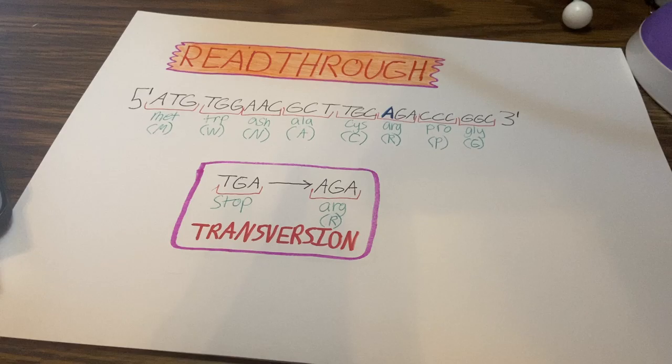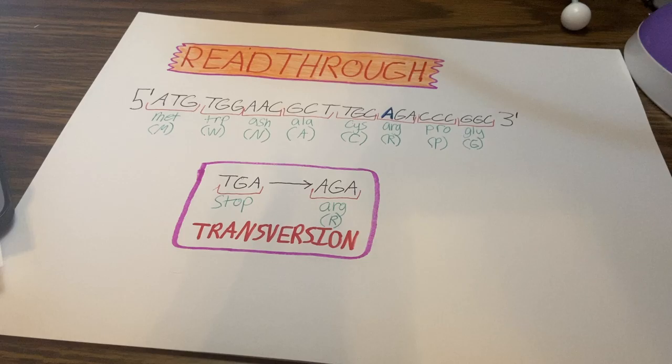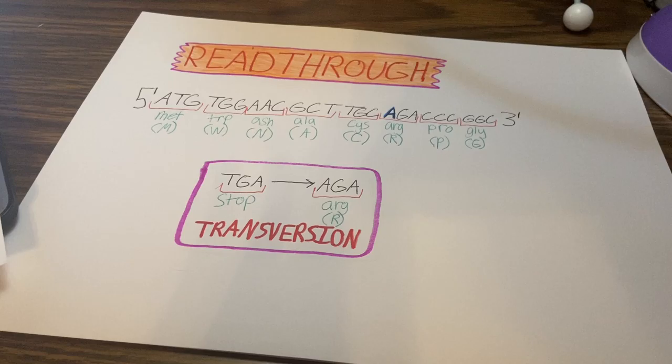On the stop codon, the base thymine has been through a transversion into the base adenine. A transversion is when the bases substitute a purine for pyrimidine or vice versa. So this stop codon is changed into the amino acid arginine.